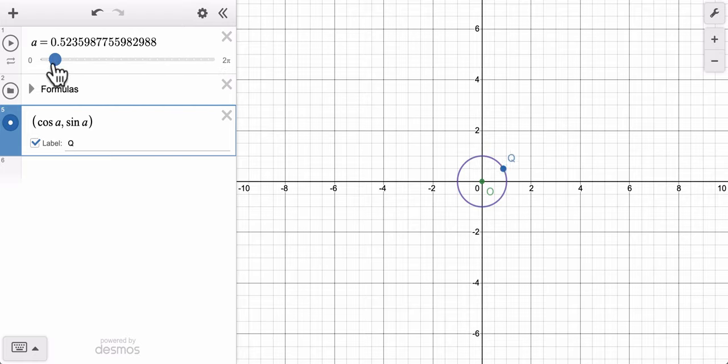Now my a value determines the location of q. q is the cosine of the angle, comma the sine of the angle.